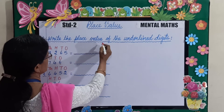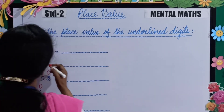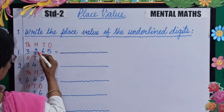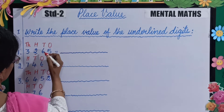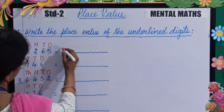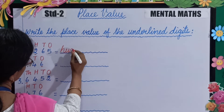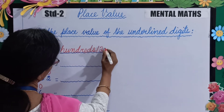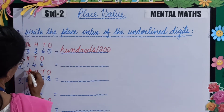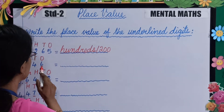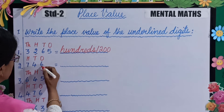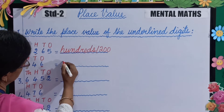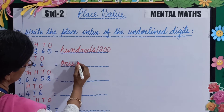Write the place value of the underlined digits. 3265 — what is the place value of 2 in this number? The place value is hundreds, so you will write here hundreds or 200. Next, 746 — which number is underlined? 6. What is the place value of 6? Ones. So you will write here ones or 6.